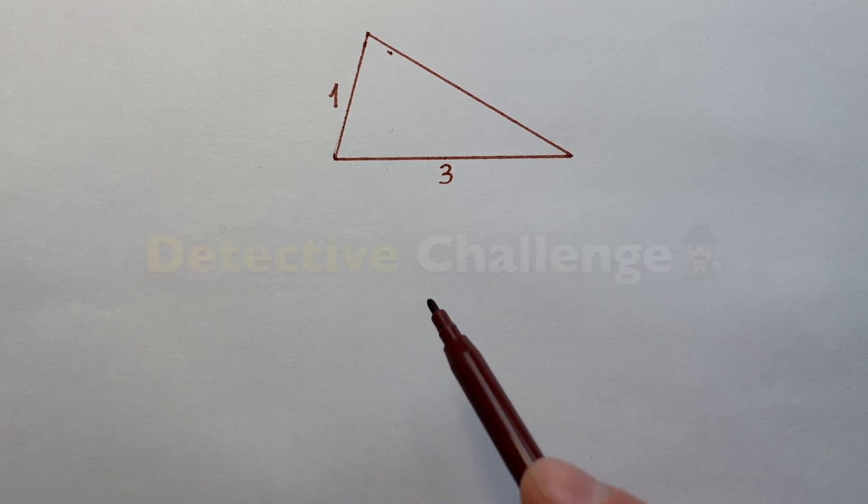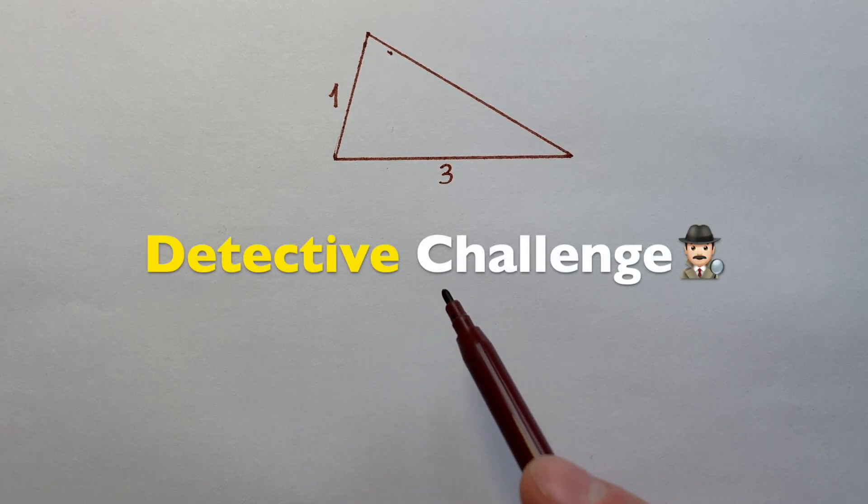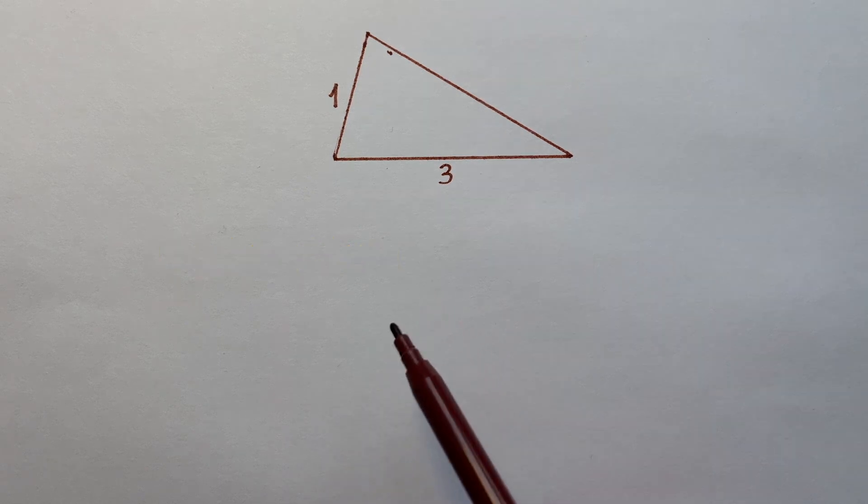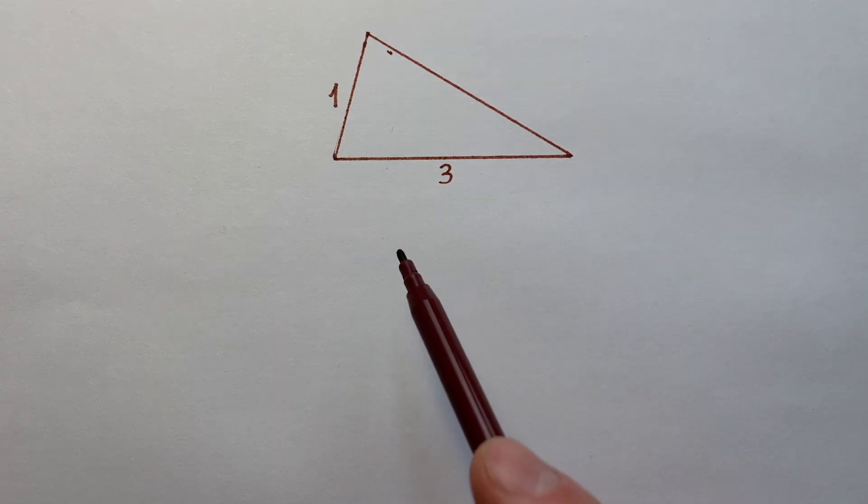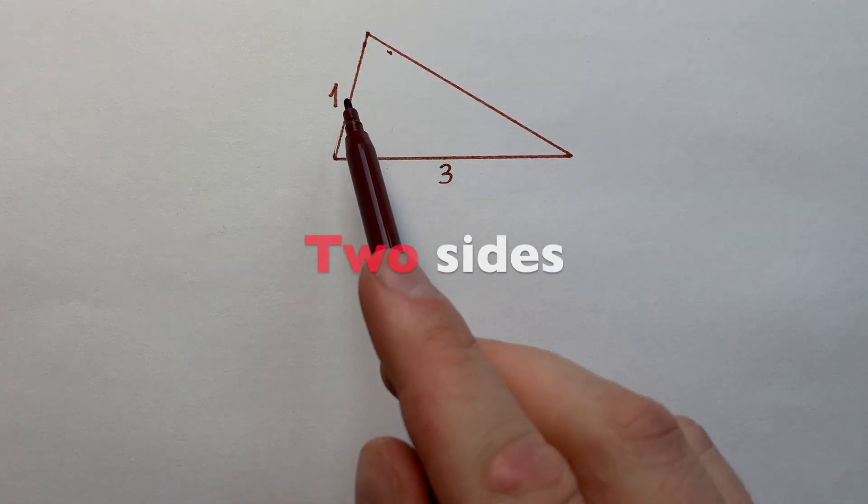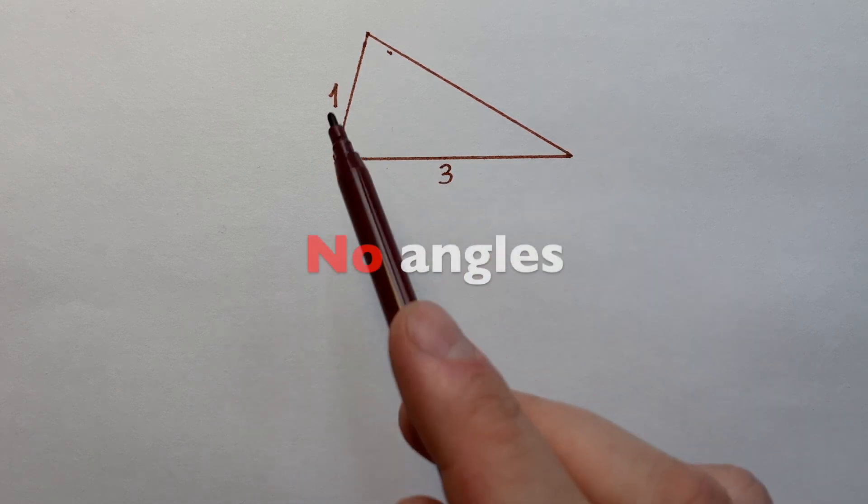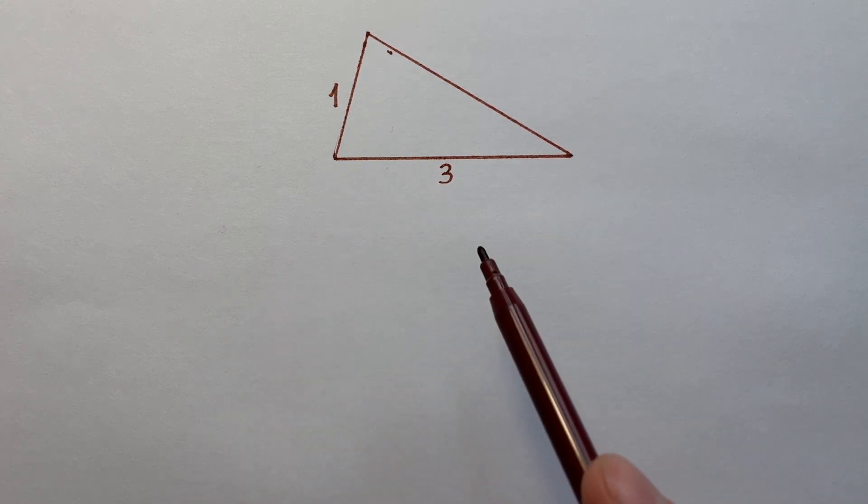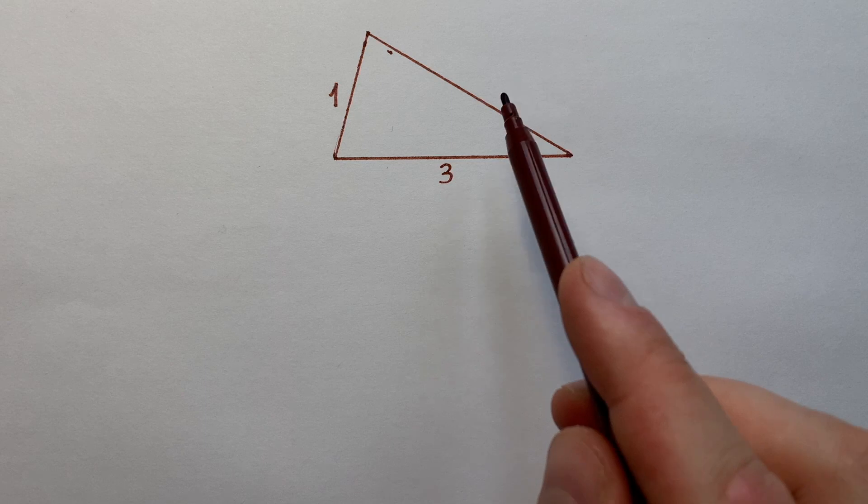Some students call this problem detective challenge, and this is not accidental because we have a minimal of initial conditions - only two sides and no angles at all, and we have to find a third side as a whole number.